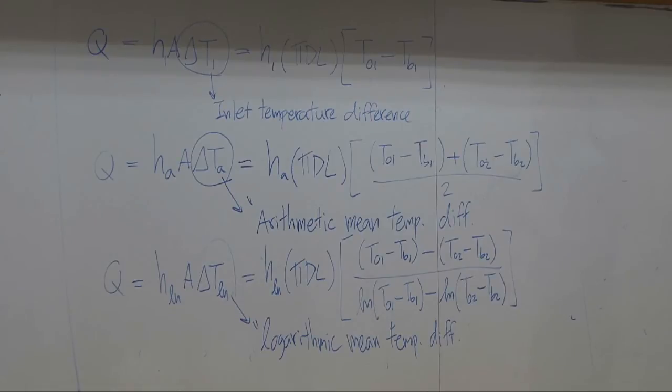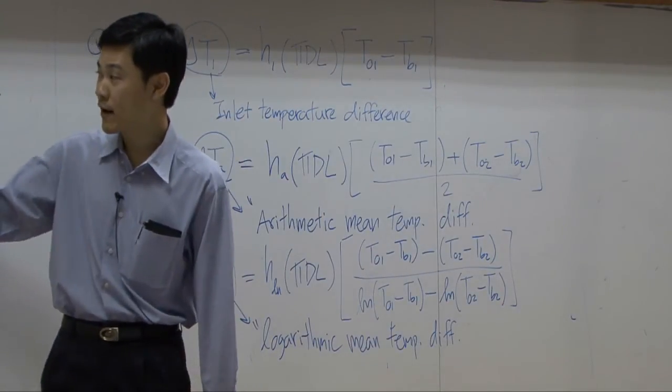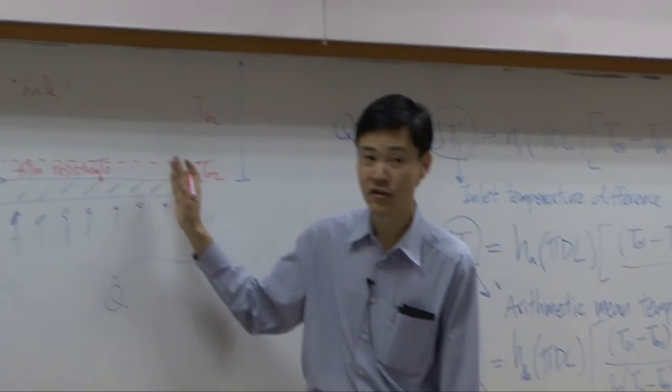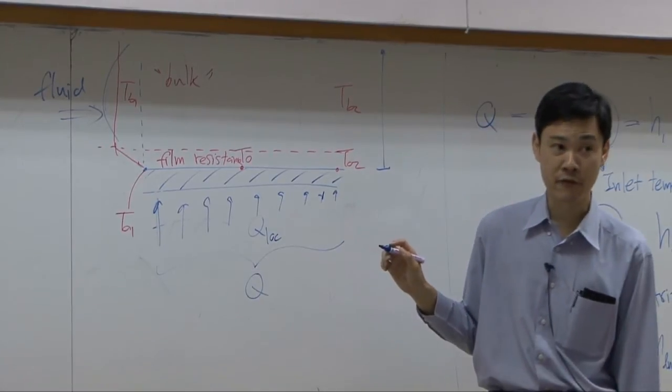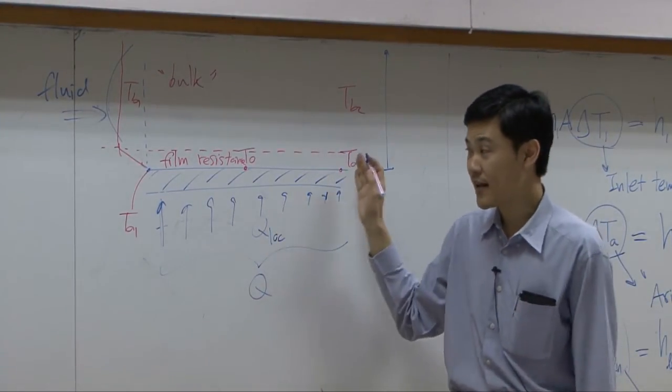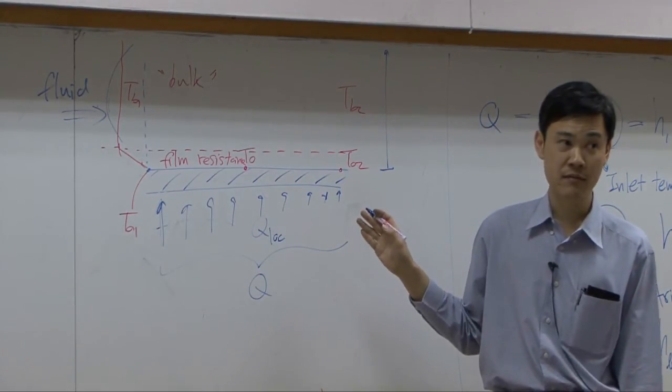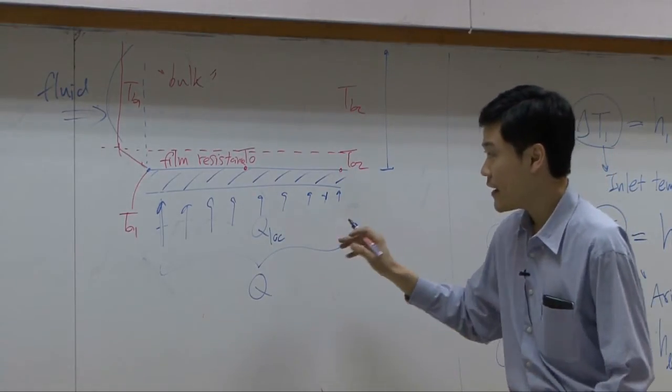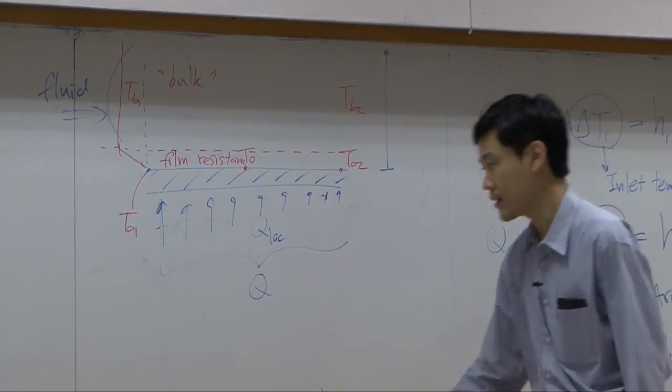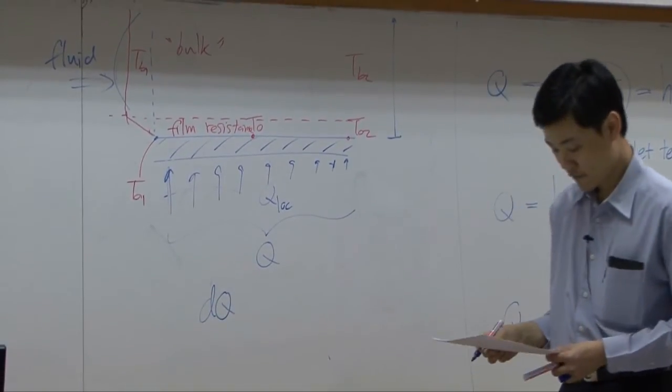But the most precise way to calculate heat transfer would still be the calculation of heat transfer individually at different position here. That means you need to find local heat transfer at different position and then integrate it all over the place. That would give you the most accurate way, but it is the most difficult.